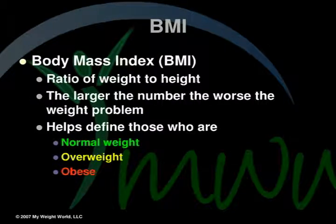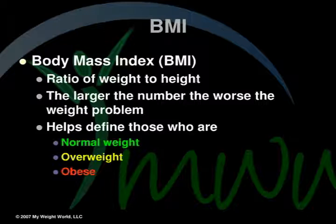Another definition we will discuss is body mass index, or BMI. The BMI is a ratio of weight to height. The larger the number, the worse the weight problem. The BMI helps define those who are normal weight, overweight, or obese.